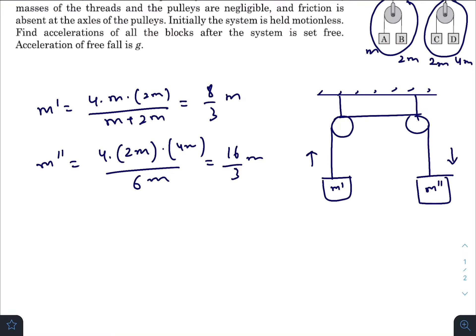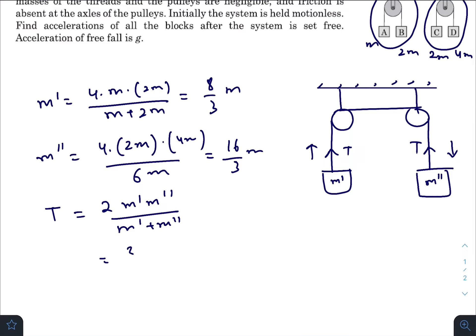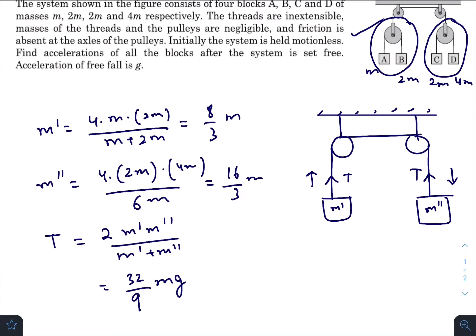So there will be an acceleration like this x and the tension T. We know for an Atwood's machine, tension is 2 m prime m double prime divided by m prime plus m double prime. That will give you 32 by 9mg. So now let us draw this diagram.